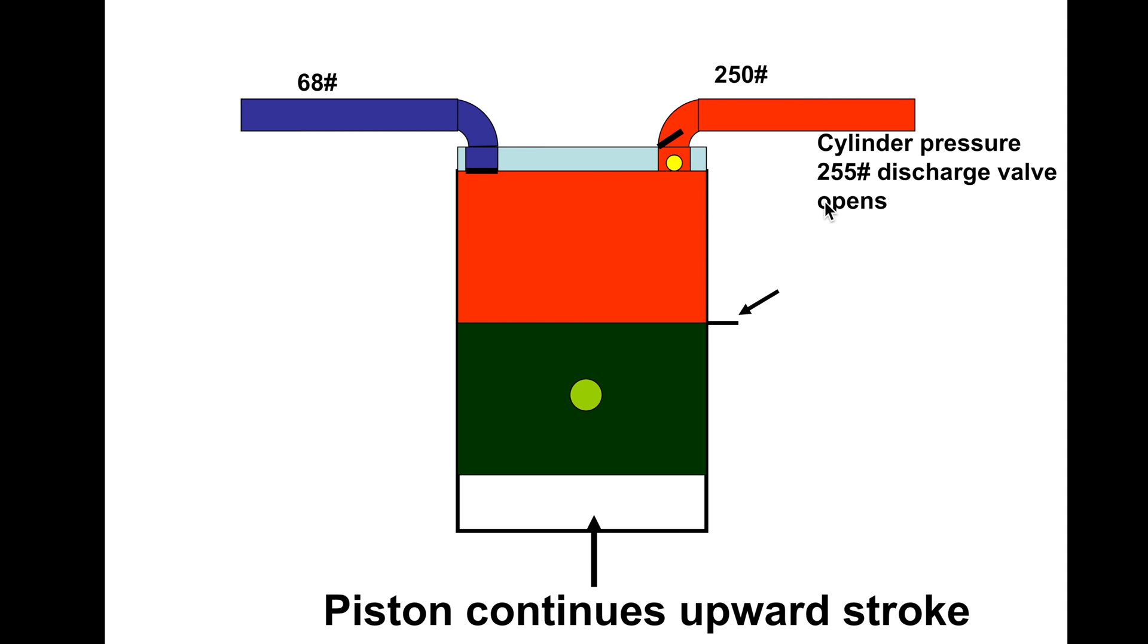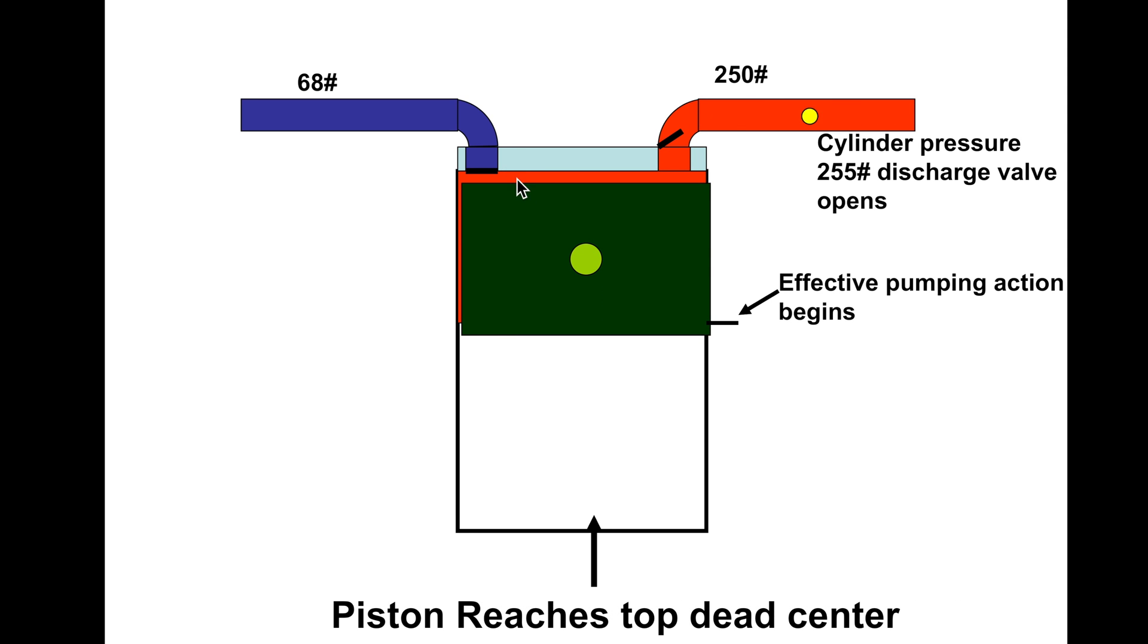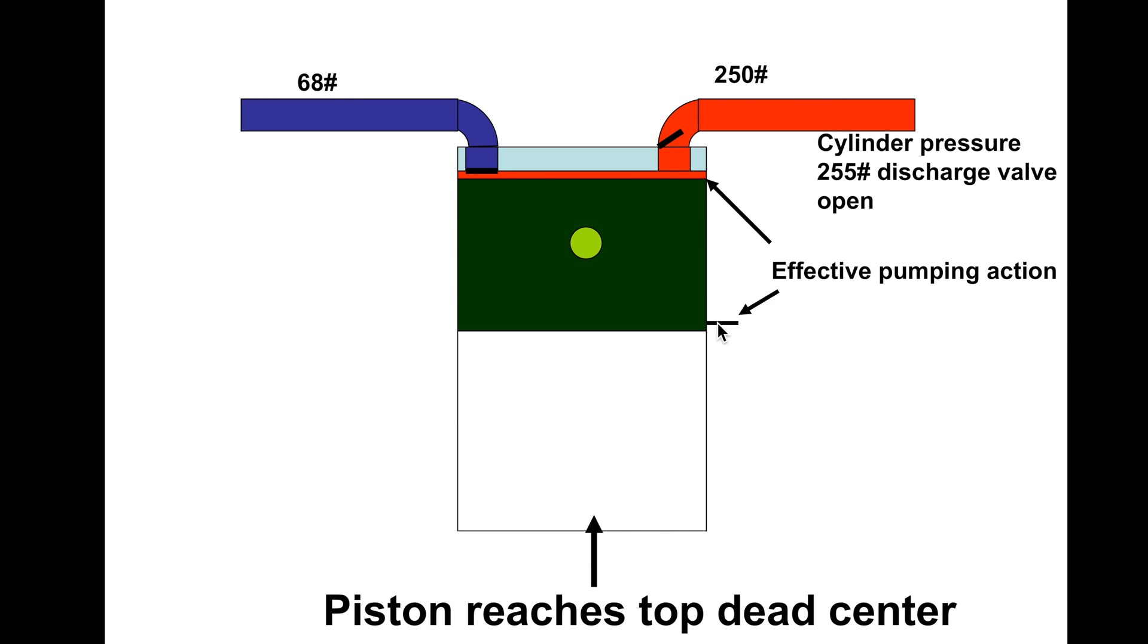The discharge valve is going to open and that's the effective stroke beginning. Goes up to the clearance volume just like it was before. Yes, I know it's crummy animation, I'm not very good at it. We have an effective stroke from here to here. The rest of the stroke was wasted, not really wasted, it's just the way it works. That's with 250 pounds of pressure and you can see from here to here is the effective pumping action.